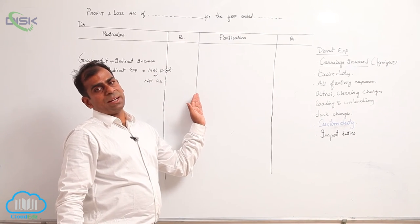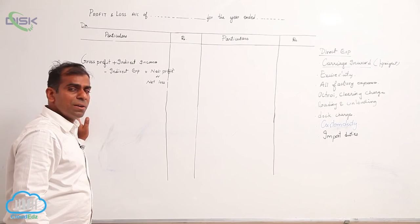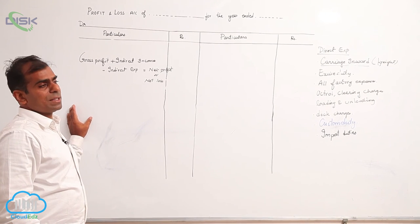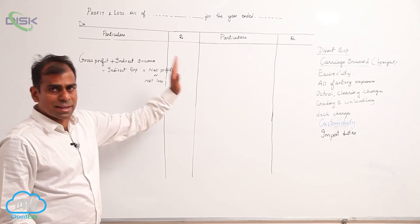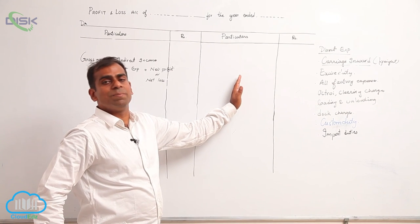So again, as discussed earlier, whatever are the remaining nominal accounts, if they are expenses we show on the debit side of your profit and loss account, and on the credit side we are going to show your indirect revenues or income.